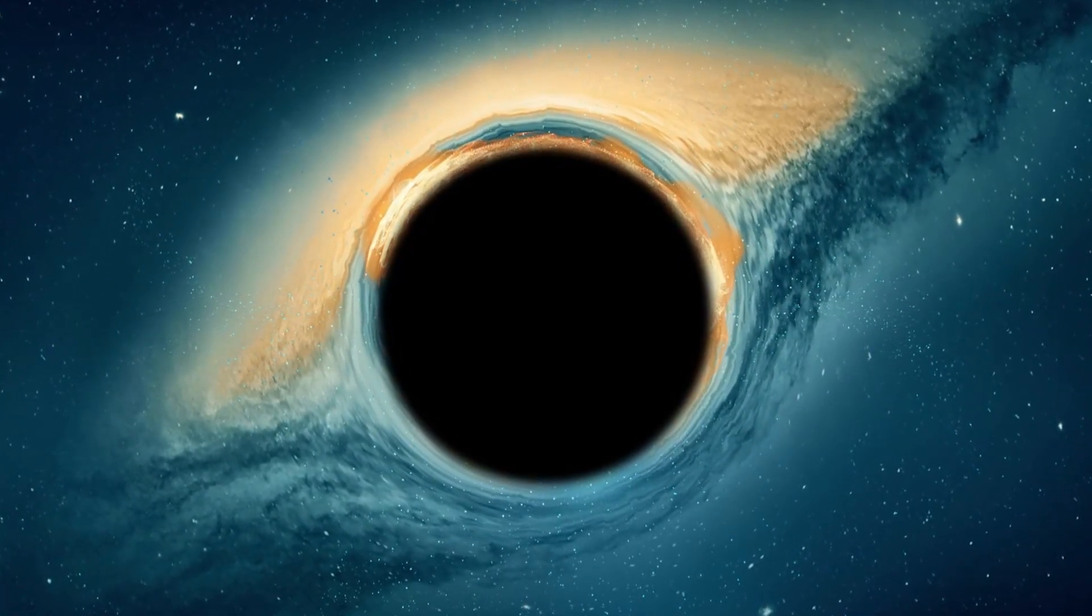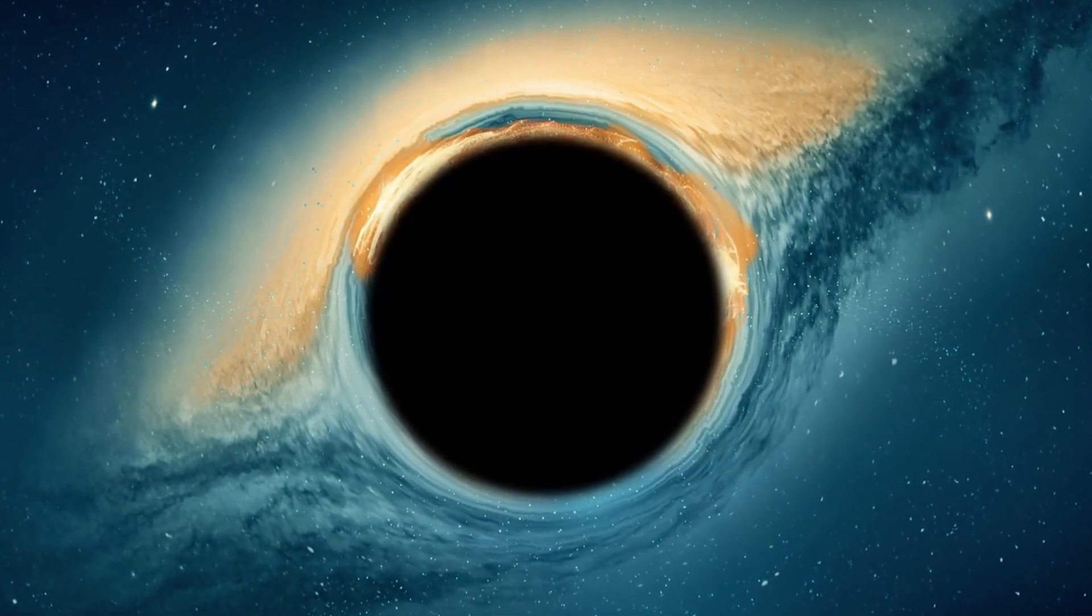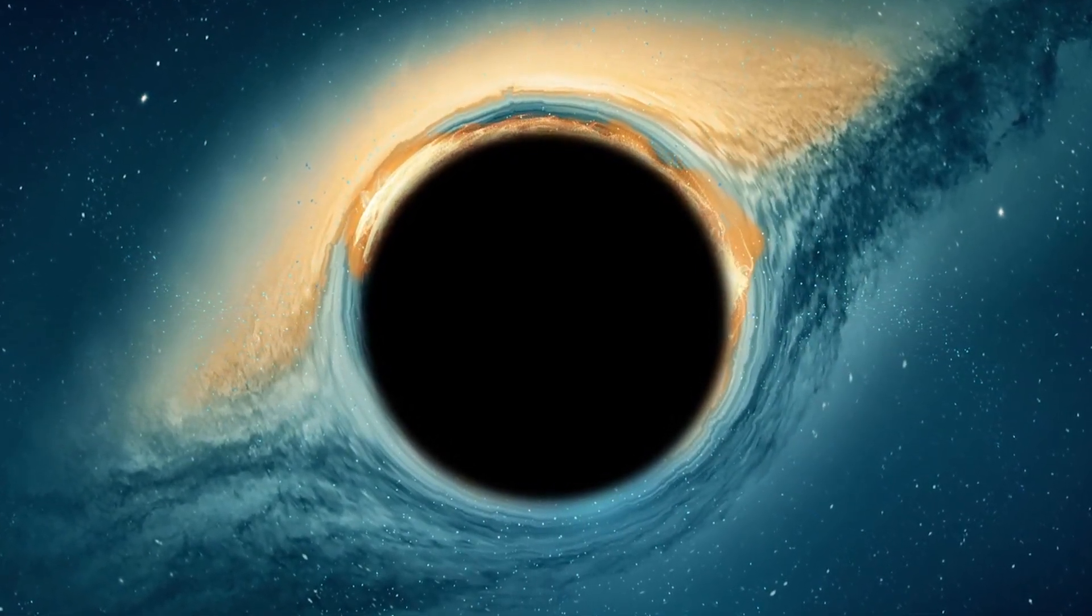This material heats up as it spirals towards the black hole, emitting X-rays and other types of radiation, creating a luminous ring known as a corona.